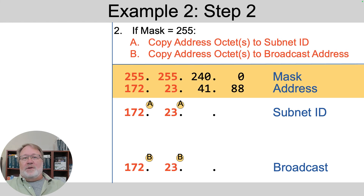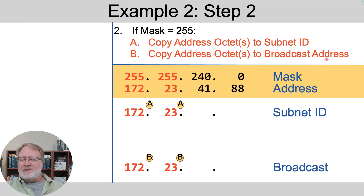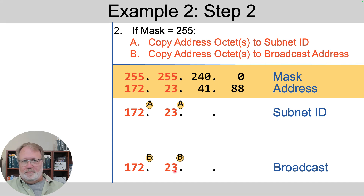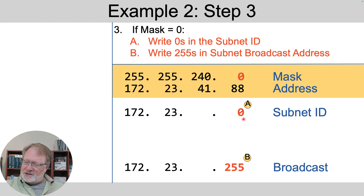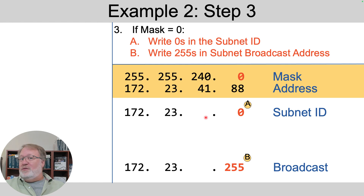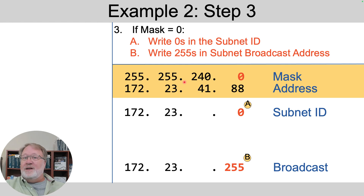For any mask octets that are 255, we copy the address to the subnet ID and to the broadcast address. We've got two octets of 255 this time, so we copy 172.23 and 172.23 below. Then at step three, if the mask is zero, we've got one octet where the mask is zero. So we write zero in the subnet ID and 255 in the subnet broadcast address. Now we've got one octet we don't know yet — the one where the mask is neither 255 nor zero.